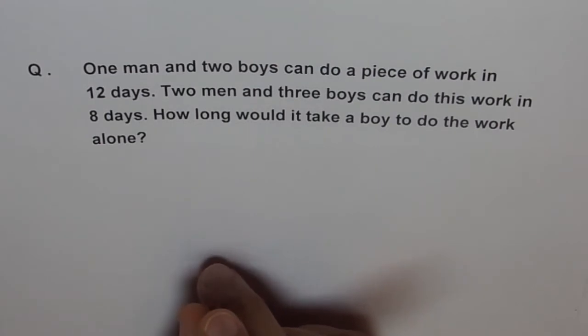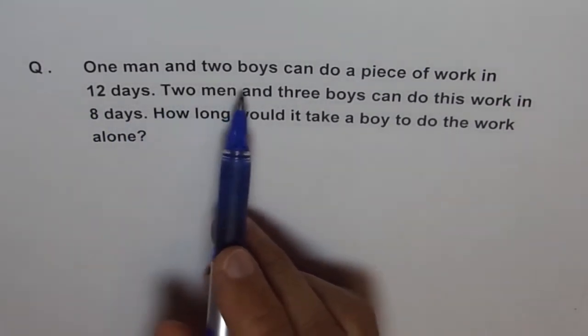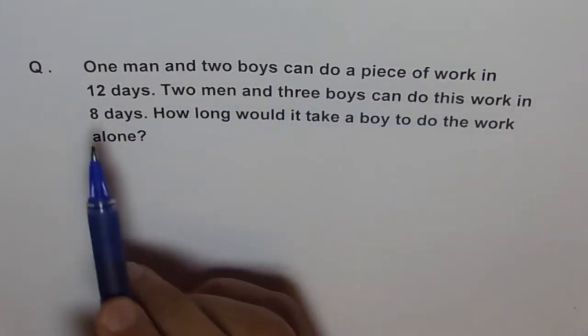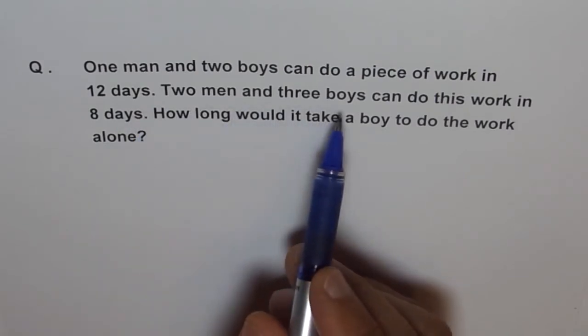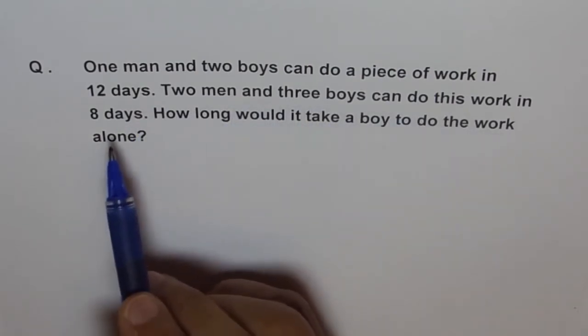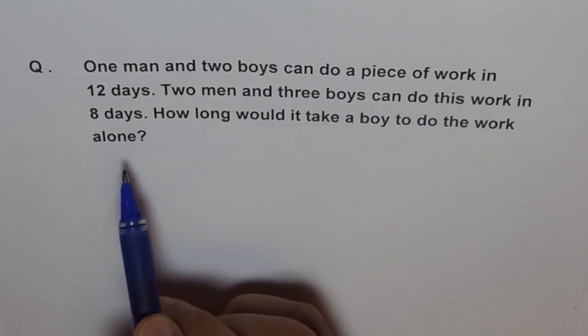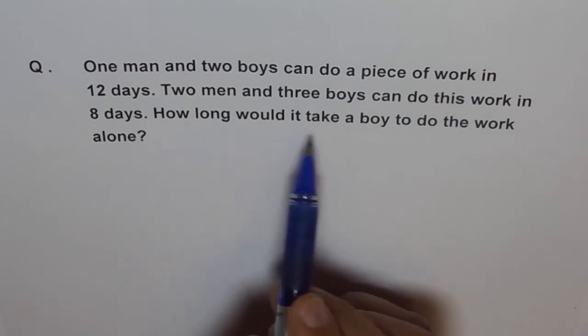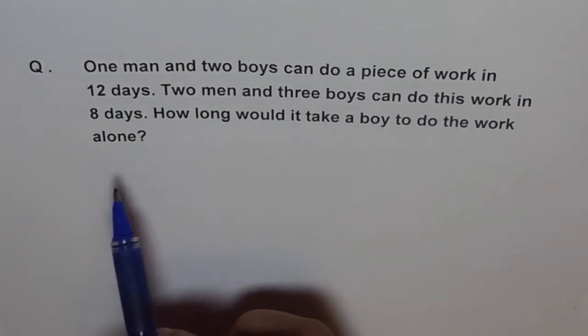That is the kind of question which we have to look into. Again, just as our rate, you remember, if a man and two boys can do a piece of work in 12 days, in one day how much work will be done? One twelfth of the work. That is the concept which we have to follow. Two men and three boys can do this work in 8 days. In one day how much work will be done by them? One eighth of the work. How long would it take for a boy to do the work alone?